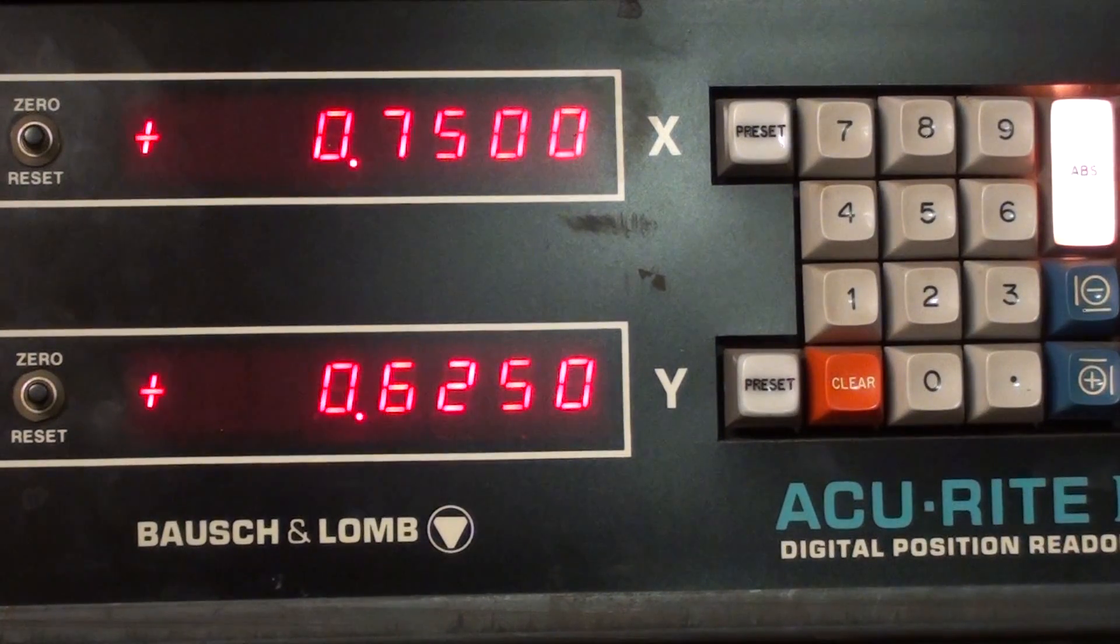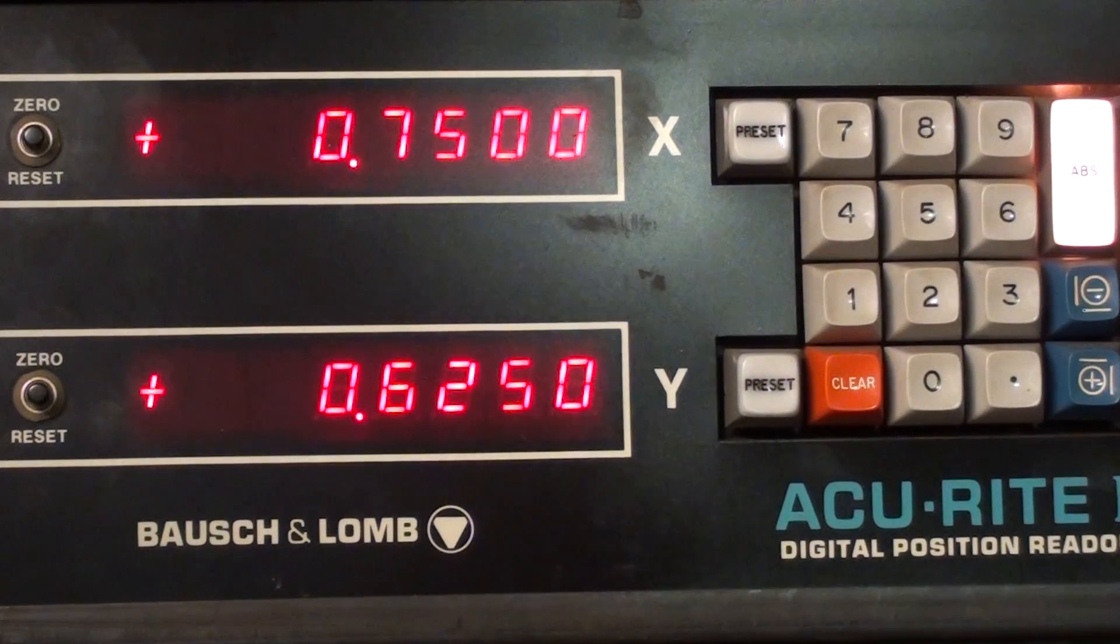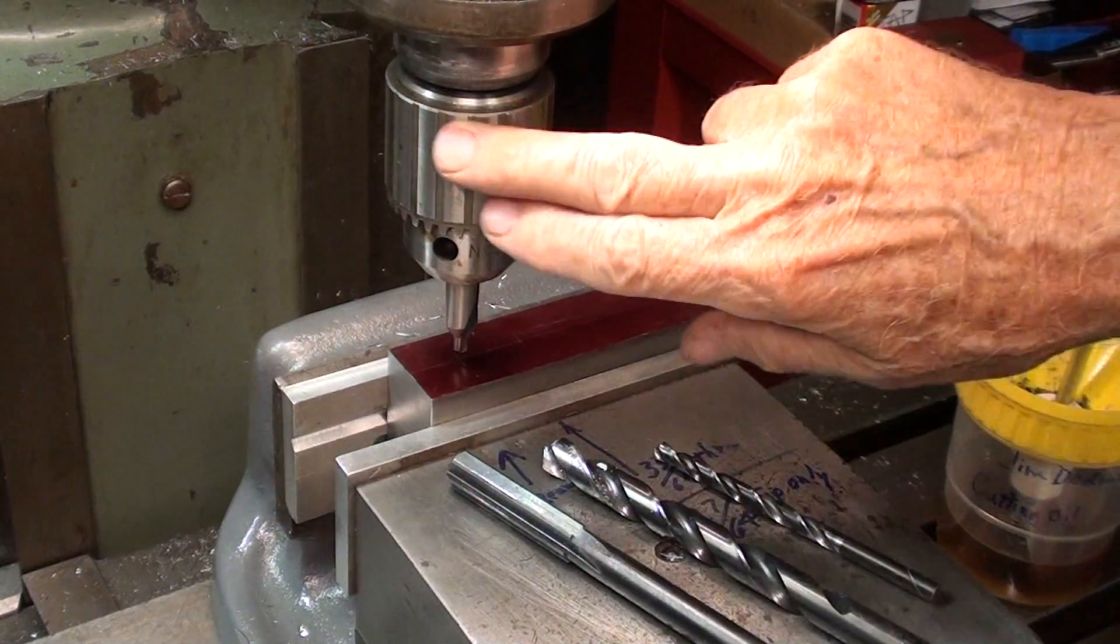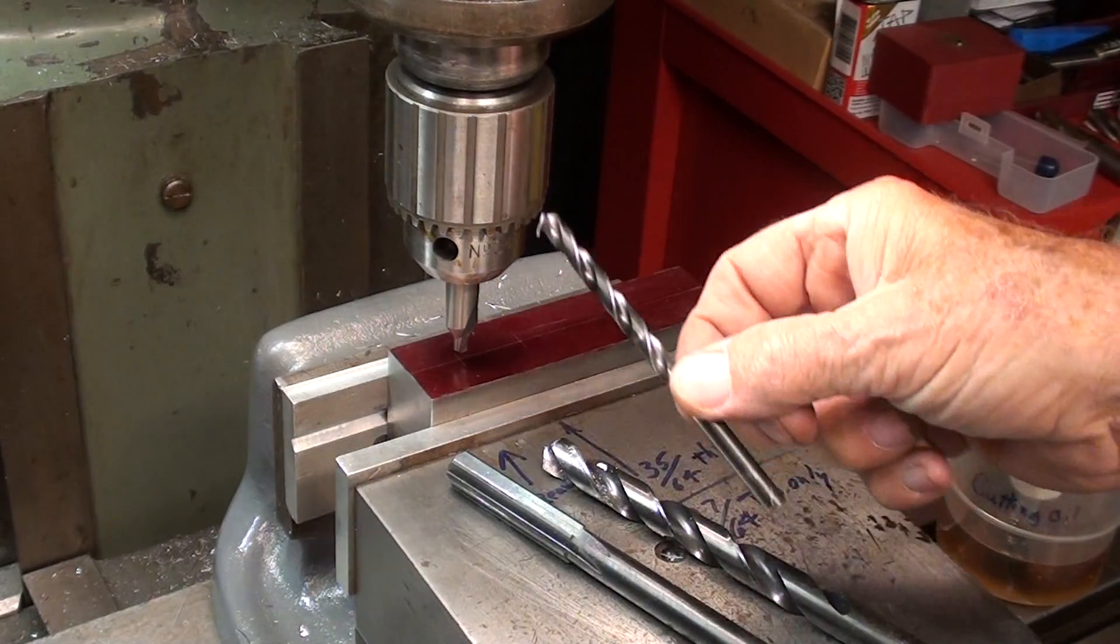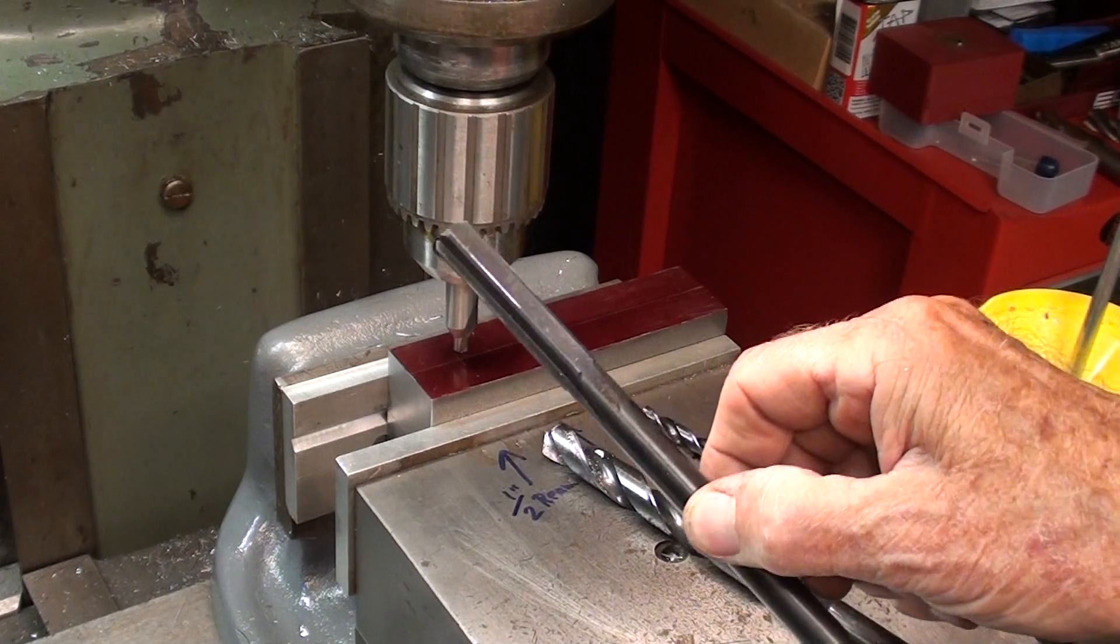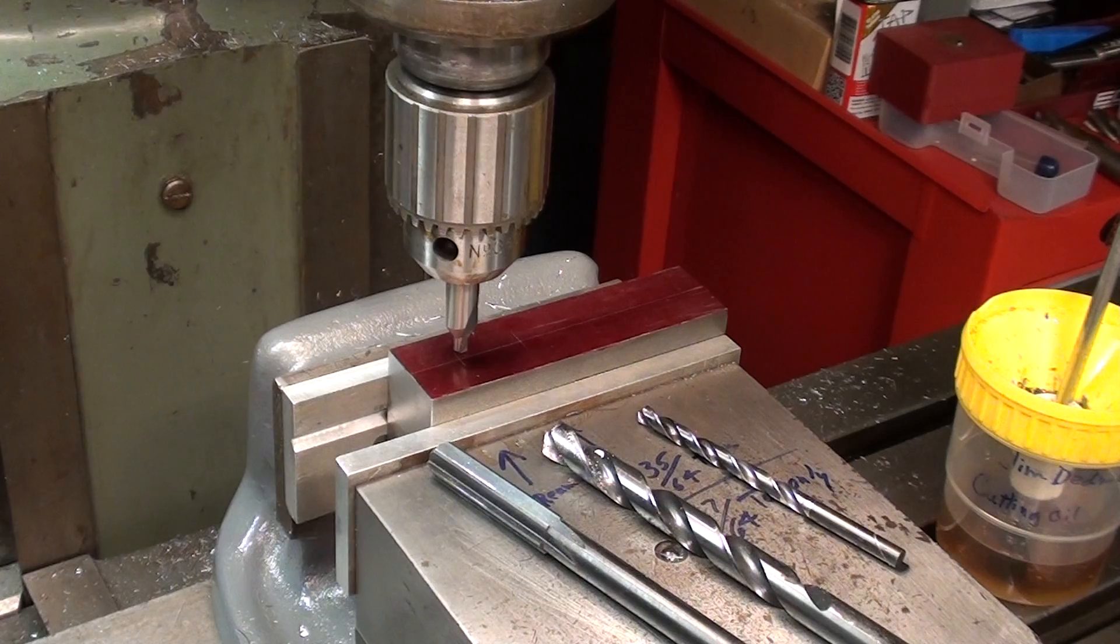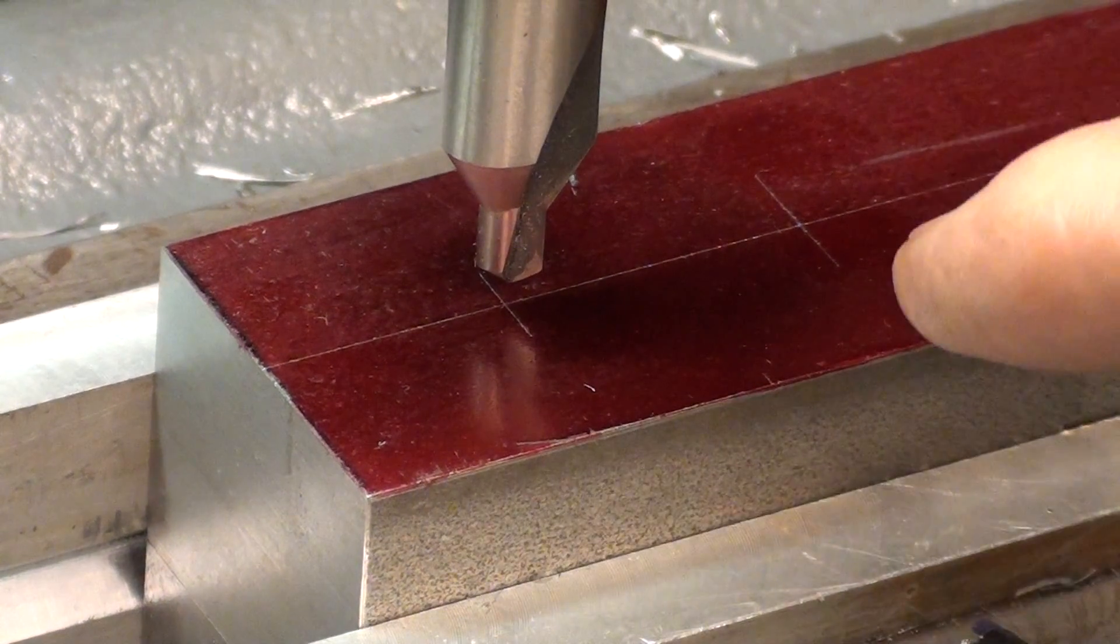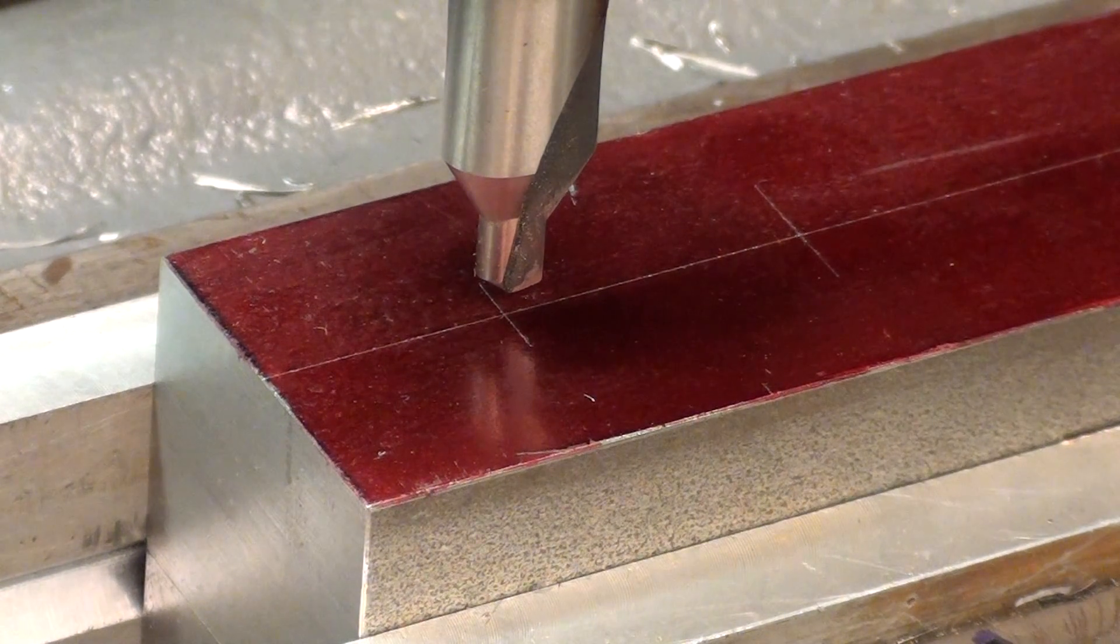And now looking at the digital readout, you can see that I've moved in from the corner, 750 thousandths on the X and 625 on the Y. I've switched to a Jacob's half-inch chuck. I've got a center drill in there. So I will center drill, then quarter-inch, then 31/64, then I am ready to ream 1/2. So I've got all the tools laid out, and I'm ready to go. And it may not show up in the video, but my center drill coincides with my layout lines.